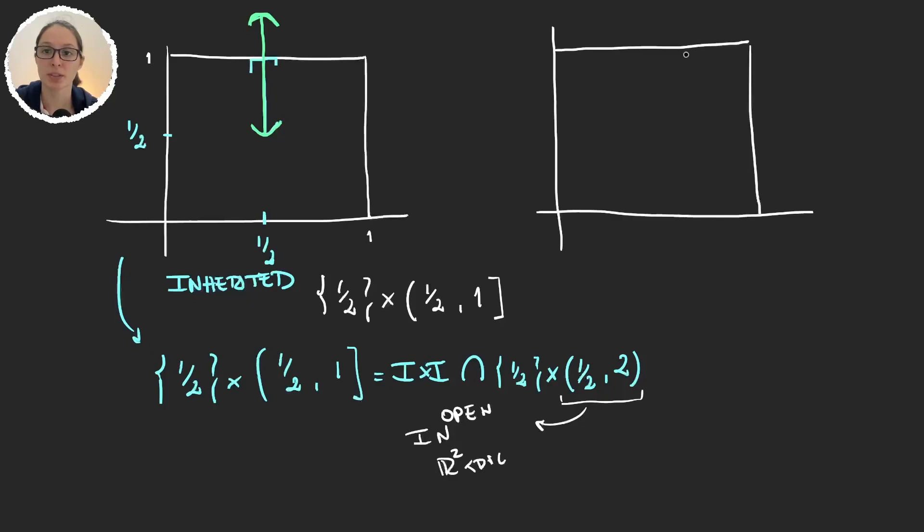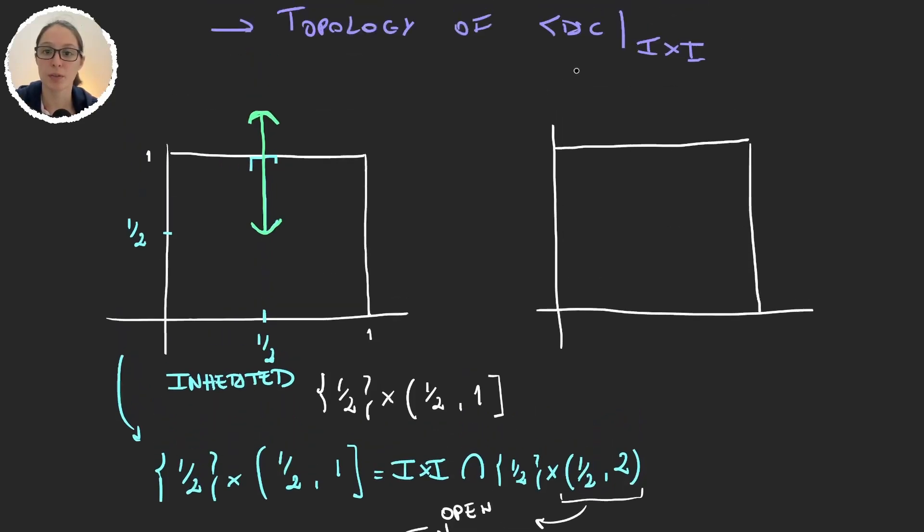But what happens when we consider the topology of the dictionary order restricted to the unit square? In this case if I want to grab an open set then the intervals will immediately jump to the other side. So if this is 1/2, the (1/2, 1] is not open because given that the dictionary order is restricted to the unit square, the (1/2, 1] is a half open interval and half open intervals are not in our set.